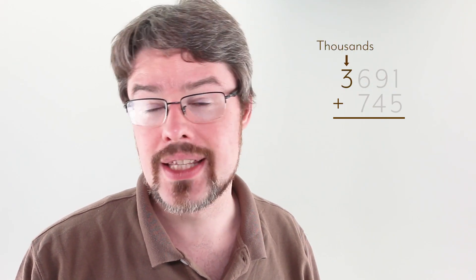Let's take a look at this example here, 3691 and 745. We're going to try to add down each column and total up how many of those things we get. A ones column gives us ones, a tens column gives us tens, a hundreds column gives us hundreds and the thousands column will give us thousands.